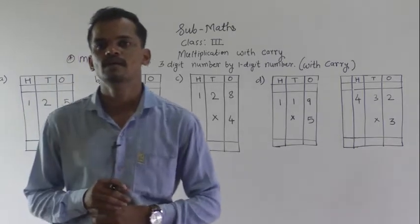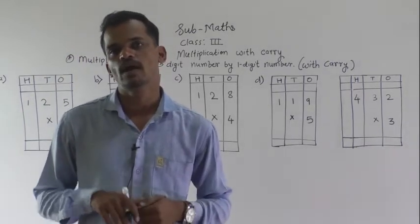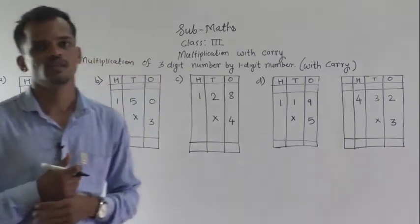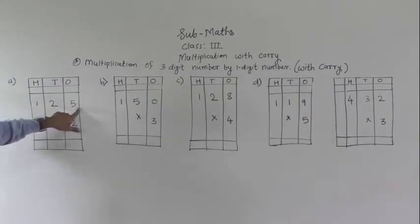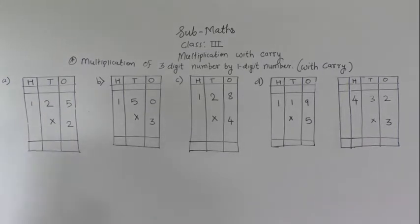Students, today we will learn multiplication of 3-digit number by 1-digit number with carry. See the first example: 125 multiply by 2.